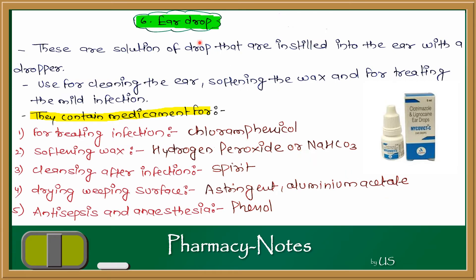Now let's discuss ear drops. Ear drops are a monophasic liquid dosage form. These are solutions of drops that are instilled into the ears with a dropper. They are used for cleaning the ears, softening the wax, and for treating mild infections. Ear drops are used according to their active pharmaceutical ingredient (API).